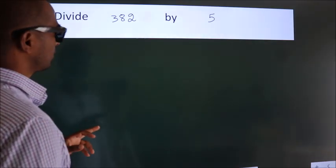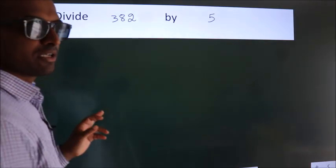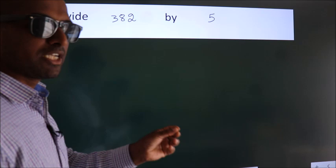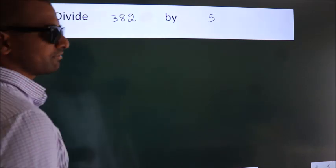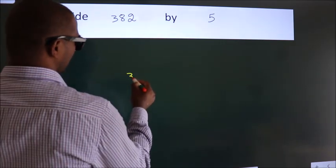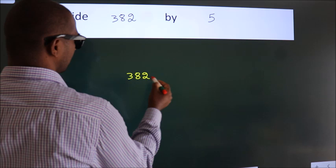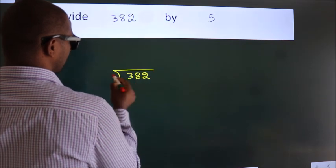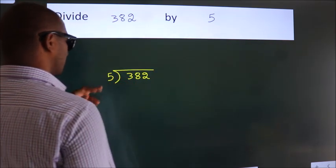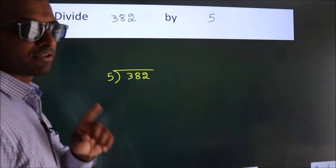Divide 382 by 5. To do this division, we should frame it in this way: 382 here, 5 here. This is step 1.